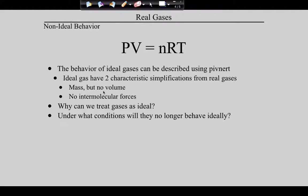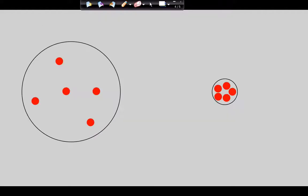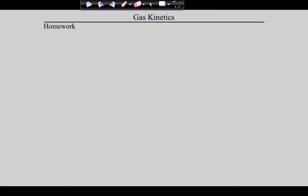Under what conditions will gases not behave ideally? High density. And what conditions cause high density? Low temperature and high pressure. At low density, molecules are spread out, particle size is negligible, and they don't stick together. But at high density, molecular volume is no longer insignificant, and intermolecular forces matter — many times the gas just liquefies. Anything that causes a gas to be higher density will cause it to behave less ideally.